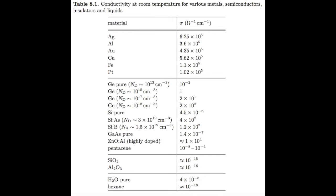If we look at the conductivity of some elements and compounds, we can see orders of magnitude difference between the conductors, semiconductors, and insulators. On the top we have metals like silver, aluminum, gold, copper, iron, and platinum. The units on the conductivity are inverse ohm per centimeter — the ohm, that omega symbol, is the unit of electrical resistance. In the middle are semiconductors like germanium, silicon, gallium arsenide, zinc oxide, aluminum, and an organic molecule called pentacene. You'll notice the N-sub-D and N-sub-A labels, referring to the number density of donors and acceptors. Semiconductors by themselves are pretty poor conductors, but by doping with atoms with one more electron (a donor) or one less electron (an acceptor), the conductivity rises dramatically.